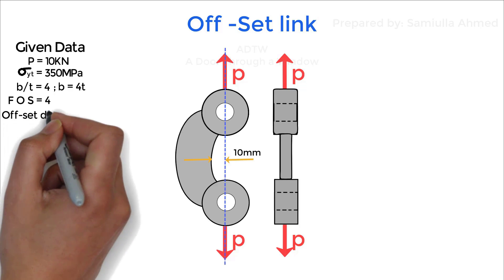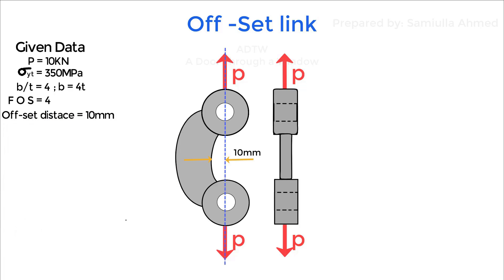And also the offset distance is given as 10 mm in the figure. We need to find out what should be the thickness and the width of the offset link.